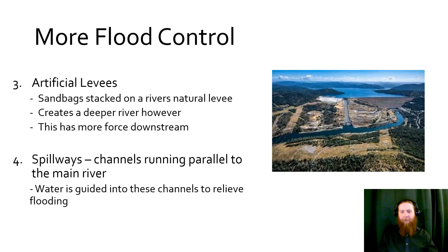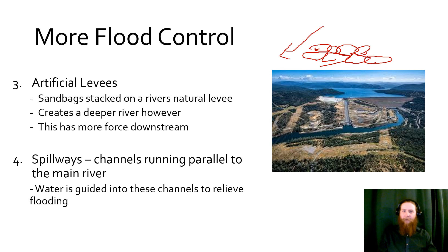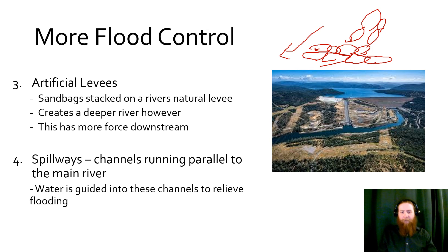We can use artificial levees with sandbags — used a lot in emergency situations when we know there will be flooding. We'll stack sandbags in an area to create man-made water diversions. Water goes the path of least resistance, so we sandbag around an area to direct it where we want, creating this artificial levee. The problem with artificial levees is they create deeper rivers, which have more force — more water equals more force — and so they can also break and cause a lot of damage.